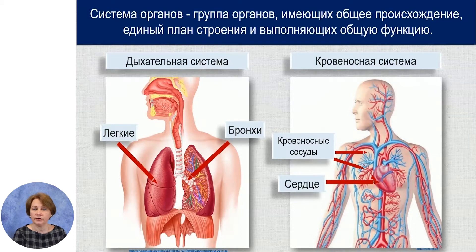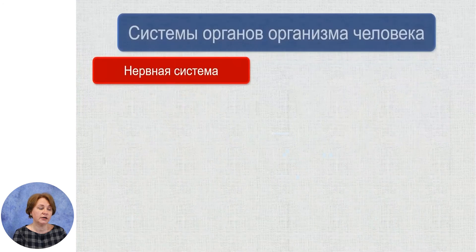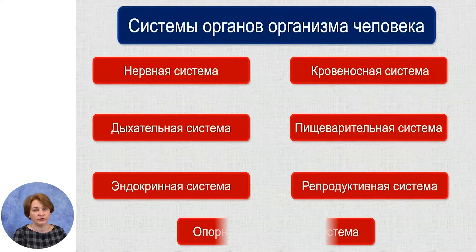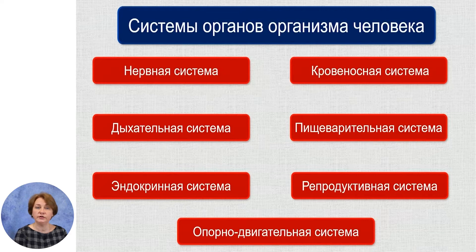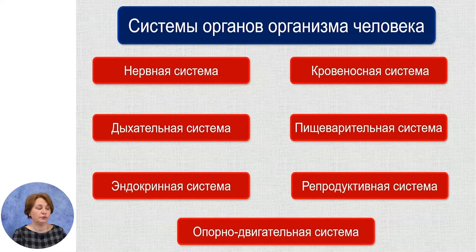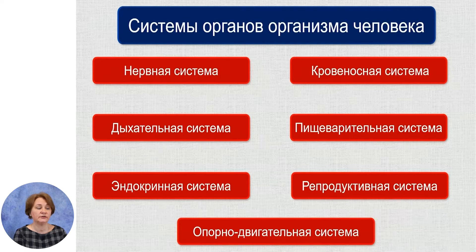Например, легкие и бронхи – это органы дыхательной системы, а кровеносные сосуды и сердце – это органы кровеносной системы. В организме человека есть различные системы органов: нервная, дыхательная, эндокринная, кровеносная, пищеварительная, репродуктивная и опорно-двигательная система. Сегодня на уроке мы начнем знакомство с системами органов, и первая система, о строении и особенностях которой мы будем говорить, – это нервная система.